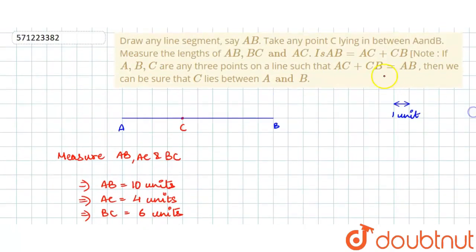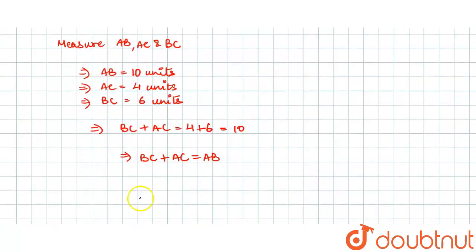Therefore, we are asked if AB equals AC plus BC. Yes, it is equal to AC plus BC. So I will write the conclusion here.